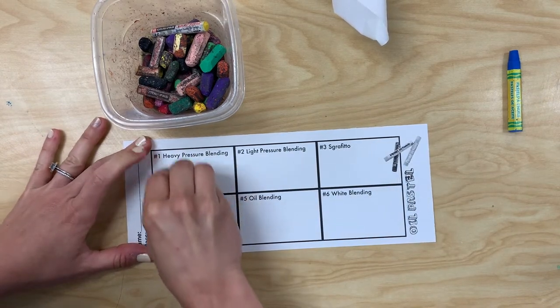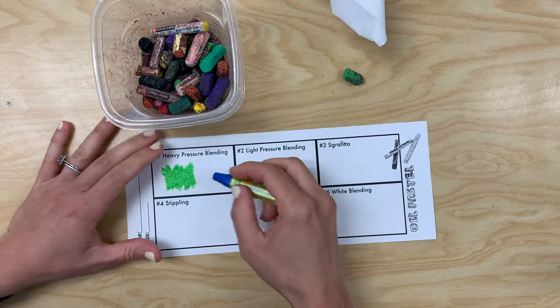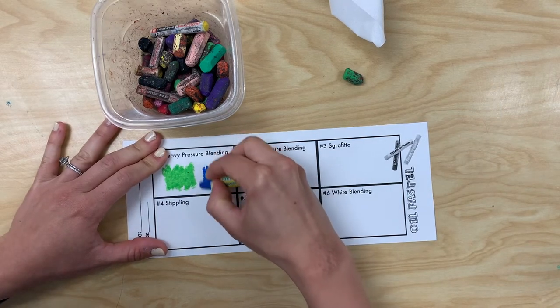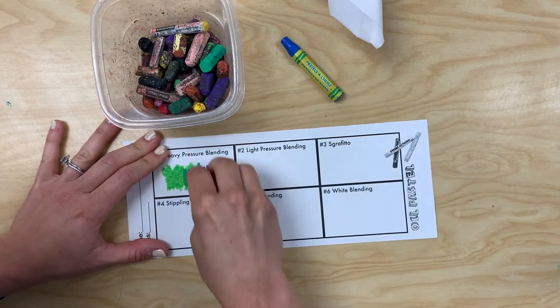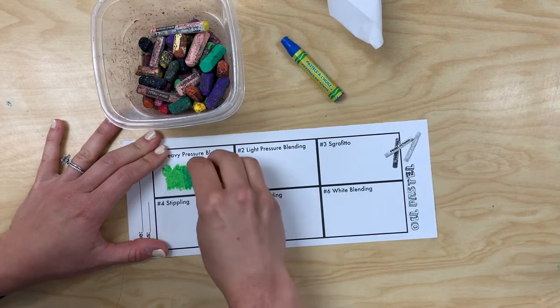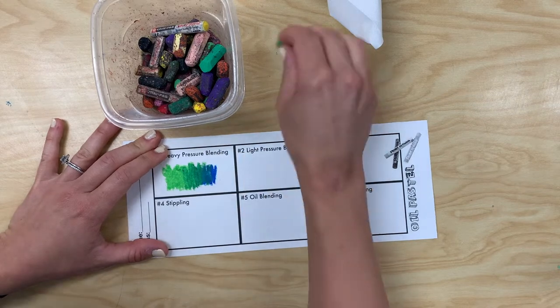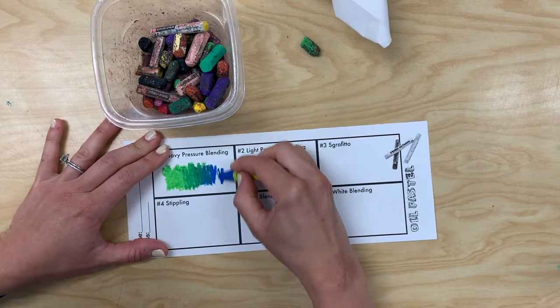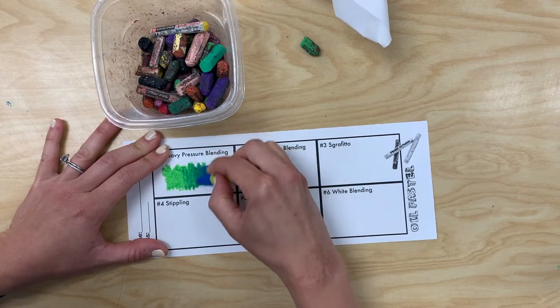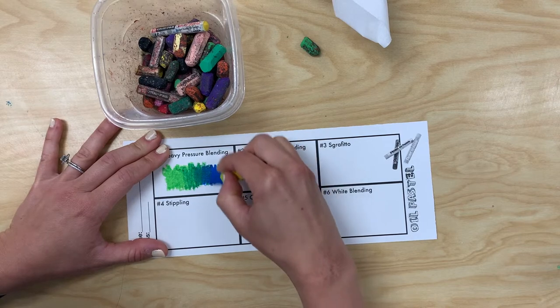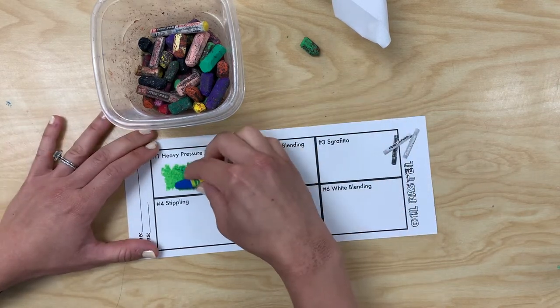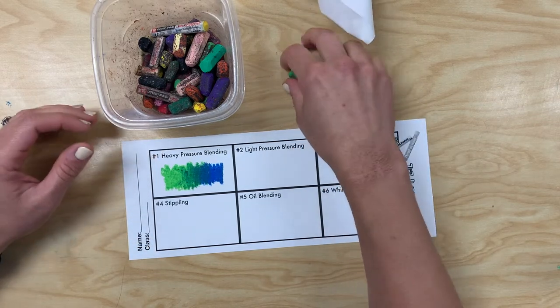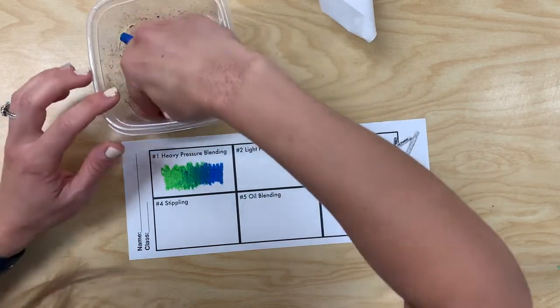For heavy pressure blending, you are going to press really hard with your oil pastels. Use two colors you would like to blend together. They should be next to each other on the color wheel, for example green and blue, yellow and orange, or red and purple. When pressing with these, overlap them in the middle to create a blending of those two colors. Use that lighter color going back on top at the end to really make it look smooth.